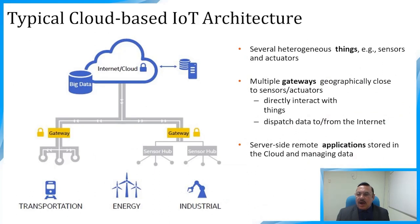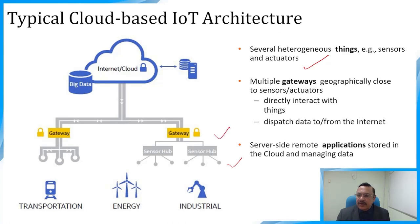In traditional cloud-based IoT architecture, heterogeneous things — sensors and actuators — may be geographically distributed across various regions. Multiple gateways located close to things interact with them and dispatch data to and from the internet, i.e., to the cloud. Cloud-side remote applications are stored in the cloud, and all data management, analytics, and business logic-related tasks are performed on the cloud.